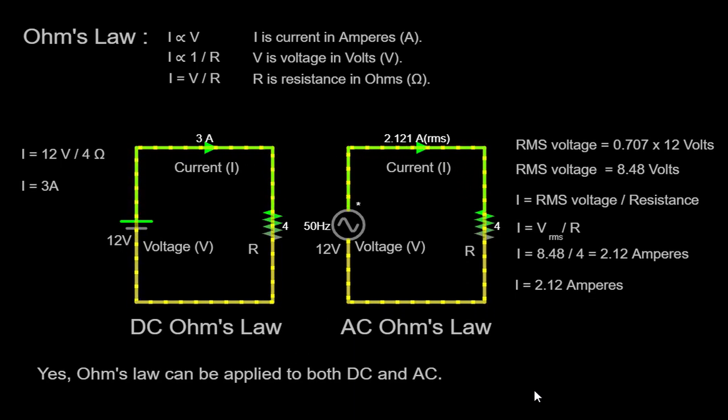In summary, Ohm's law is a versatile principle that transcends the boundaries of DC and AC circuits. Whether we're dealing with a direct current circuit or an alternating current circuit, the relationship between voltage, current, and resistance remains consistent. Ohm's law allows us to make accurate predictions and calculations, ensuring the proper operation of our circuits and promoting electrical safety.